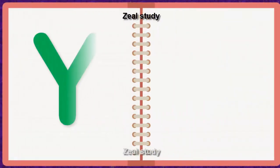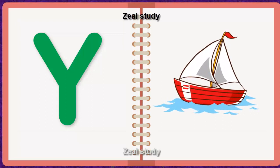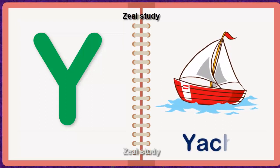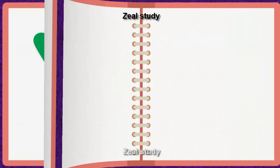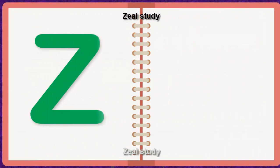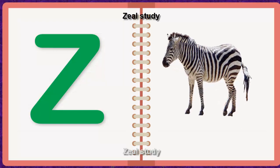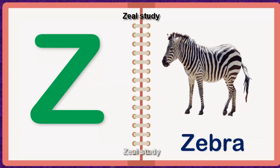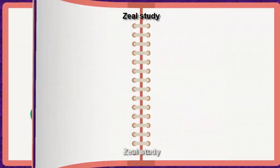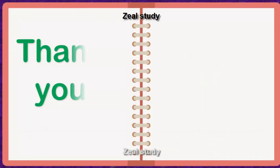Y for Yacht. Y, A, C, H, T. Yacht. Z for Zebra. Z, E, B, R, A. Zebra. Thank you.